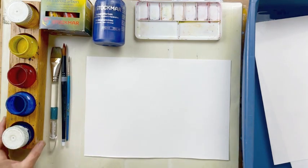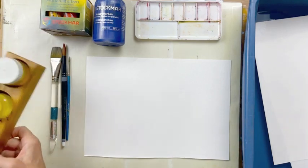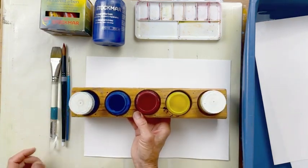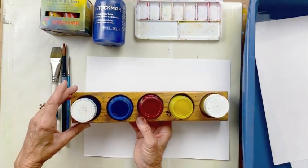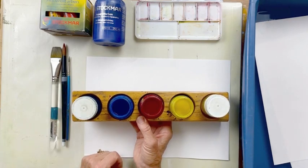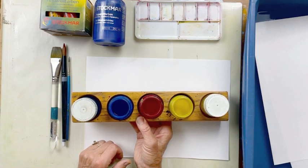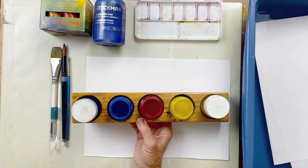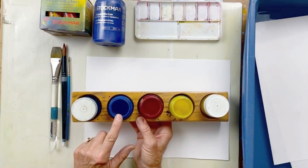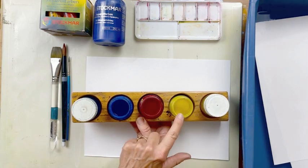Traditionally the Waldorf watercolors are done with paints that are in a wood container so that they don't tip over, and they have a lid on them. Normally these are the five colors I use: ultramarine blue, carmine red, lemon yellow.